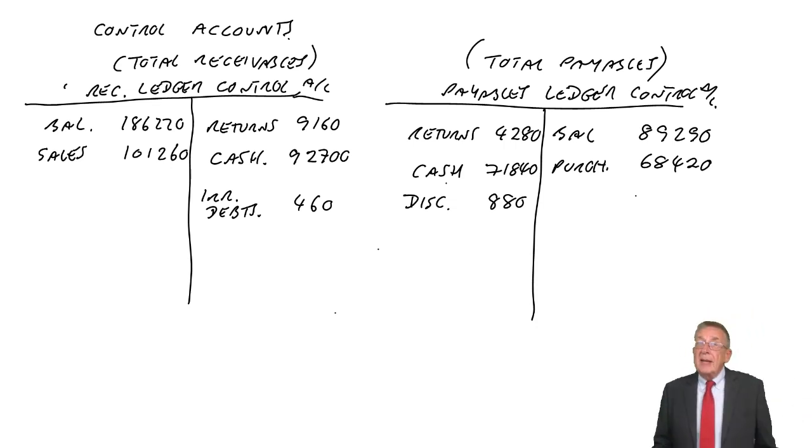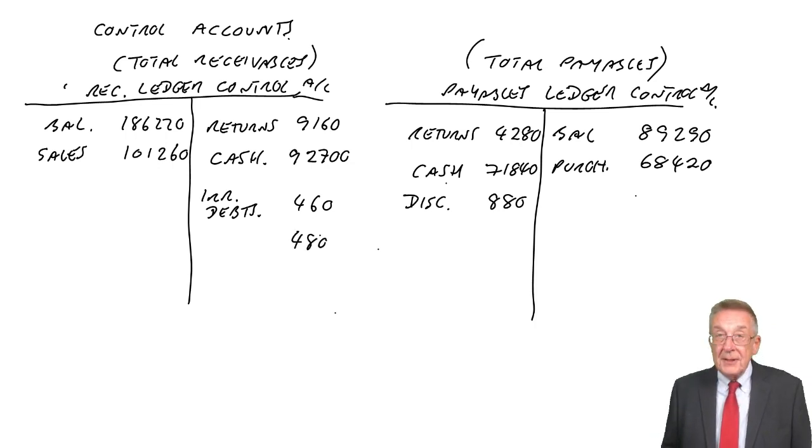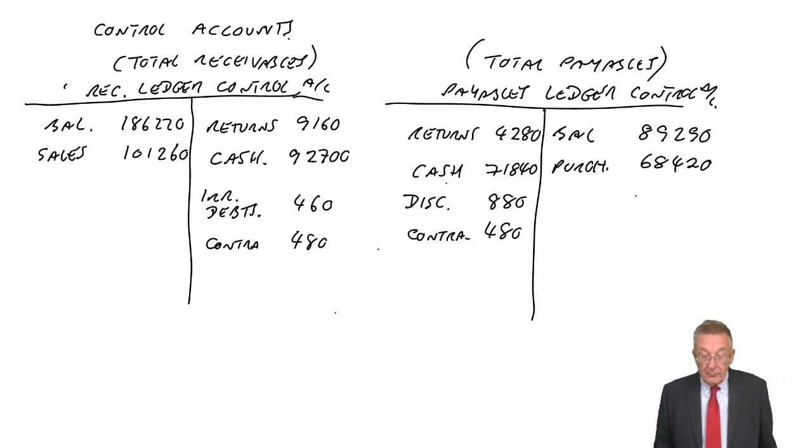Refunds to customers, I'll leave that for one second because I need to say a little bit about it. Let's jump for a moment. Contra settlements for 810. Again, in the last lecture I explained, a contra always reduces receivables, credit receivables. And the double entry reduces payables, debit payables.